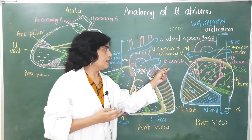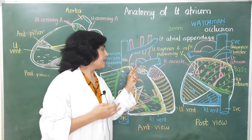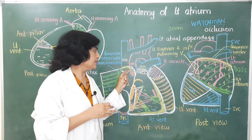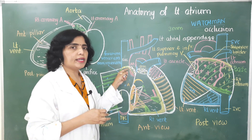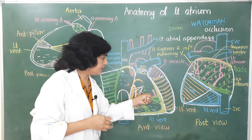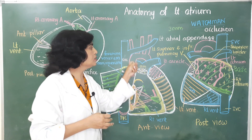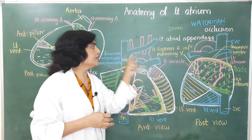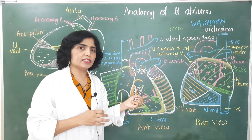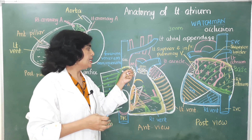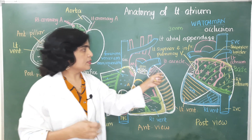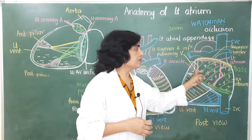Like the left auricle, the right auricle also shows a sponge-like structure of musculi pectinati within it. However, when thrombi in the right auricle get dislodged, they pass from the right atrium into the right ventricle, and from the right ventricle through the pulmonary trunk into the lungs, causing pulmonary embolism. That is the key difference between thrombosis formed in the right auricle versus the left auricle.